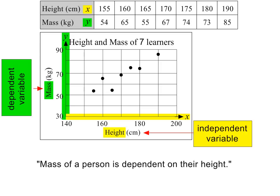So remember, the independent variable is always shown on the horizontal or x-axis, and the dependent variable is always shown on the vertical or y-axis.